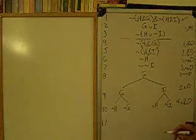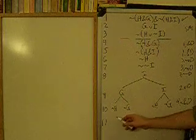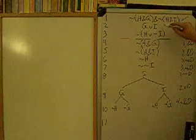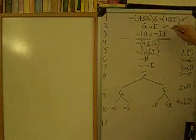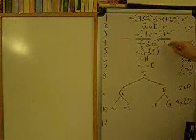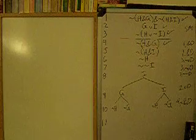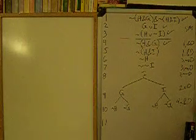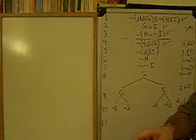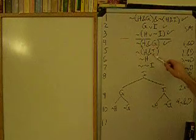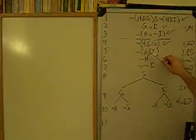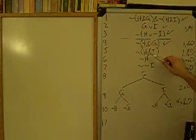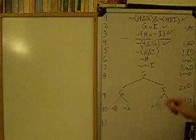On line eleven we're going to carry out from line five. We just did four, so now we're going to do five. Line five: it is not the case that H and I occur — which means either H fails or I fails.